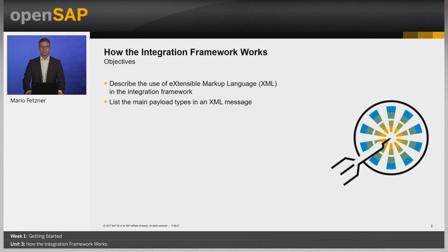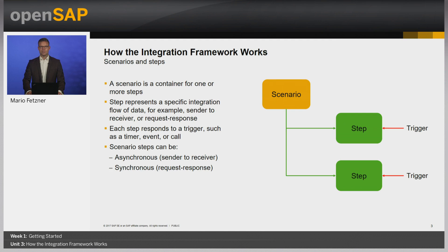Hello and welcome to week one, getting started for the course in action: Integration Framework for SAP Business One. My name is Mario Fetzner, and in this unit I will tell you how the integration framework works. When completing this unit, you will be able to describe the use of Extensible Markup Language in the integration framework and list the main payload types in an XML message. Scenarios were introduced in the previous unit. A scenario is essentially a container for one or more steps, and the logic for the integration is implemented at the step level. Each step represents a specific integration flow of data, for example from a sender system to a receiver system, or a request to an application or service with a response.